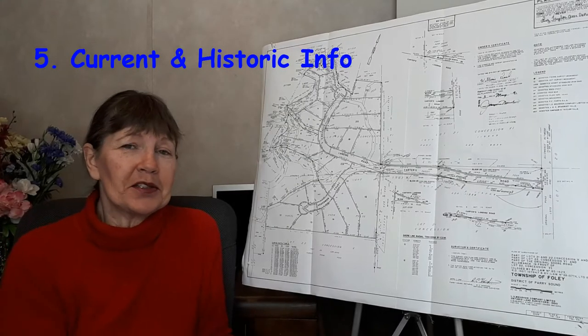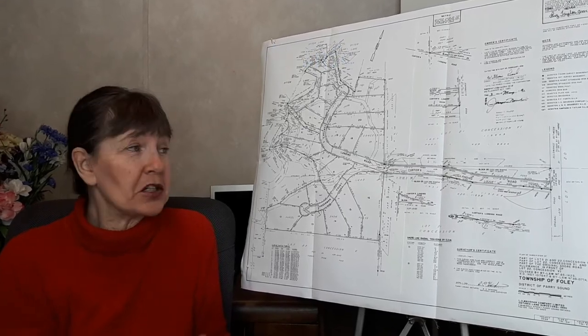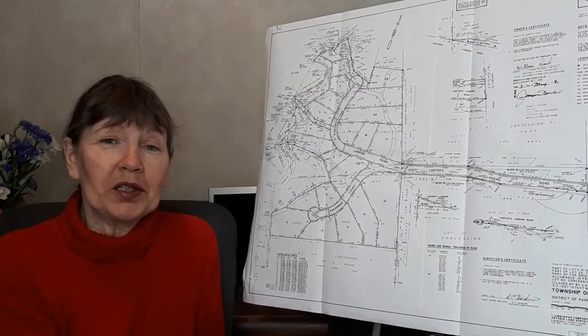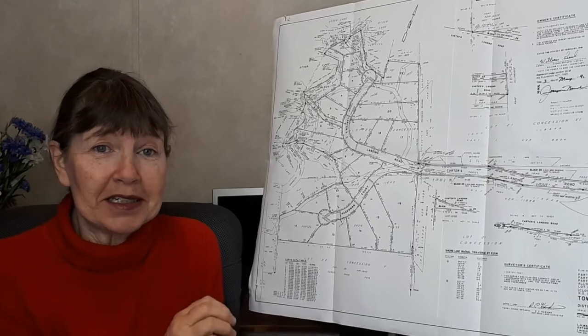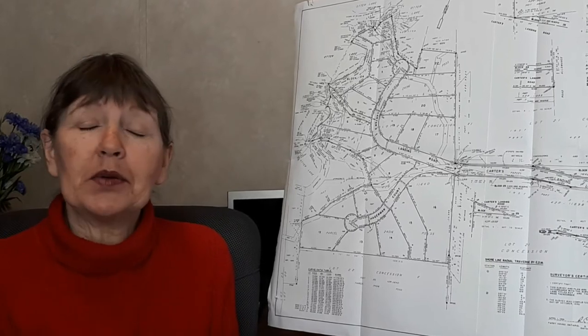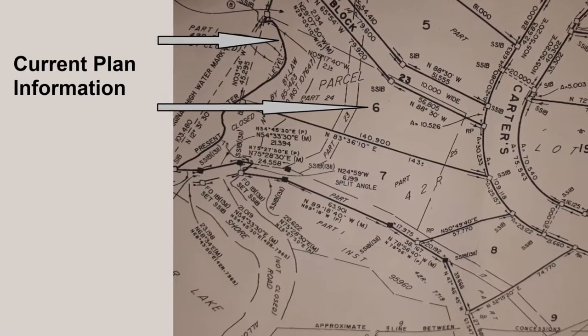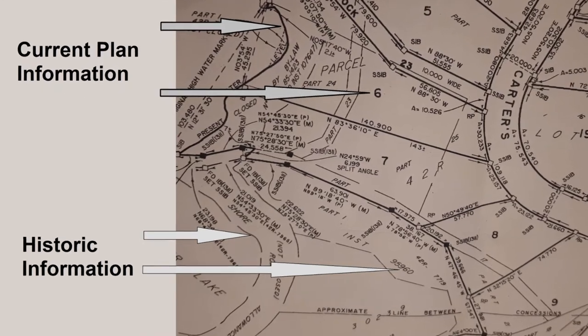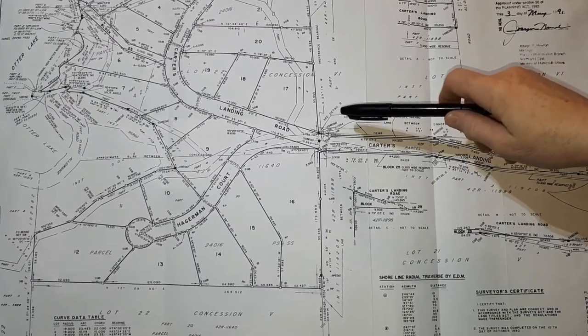When I first started reading plans of survey I found them overwhelming, especially complex plans like this one because there was so much information. But it didn't take me long to learn to just keep it simple and look for only the information I needed at the time. The current information is quite easy to find because surveyors follow a standard of drawing current information in darker lines and bolder text, compared to historic information which is drawn in thinner lines and thinner text.